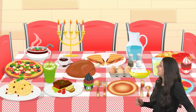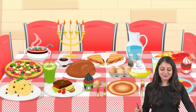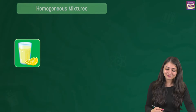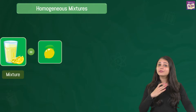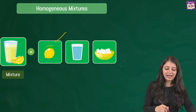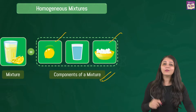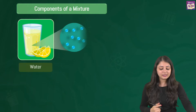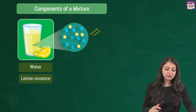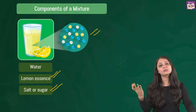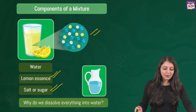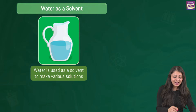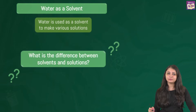The dinner table is all set — let's focus on lemonade, which we were discussing in the last class. When you look at lemonade, all the substances are uniformly distributed throughout. We have lemon juice and sugar added to water — these are the components of this mixture. Particles of water are present and in between them are lemon juice, sugar, or salt particles. Water is actually a universal solvent used to make various solutions.